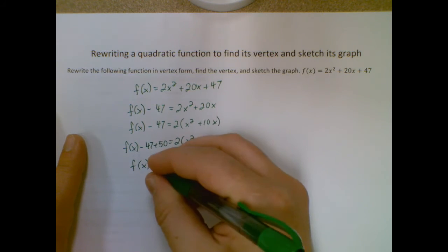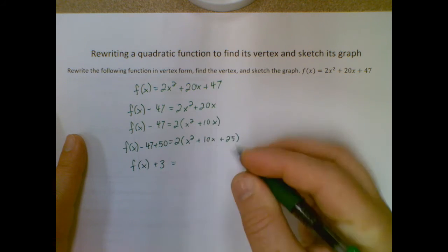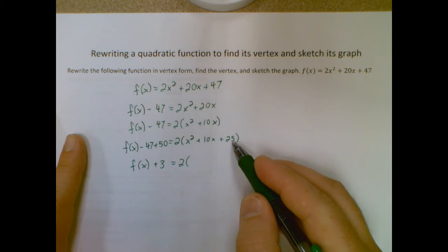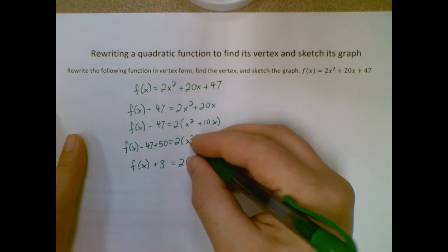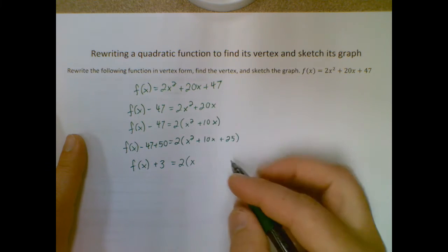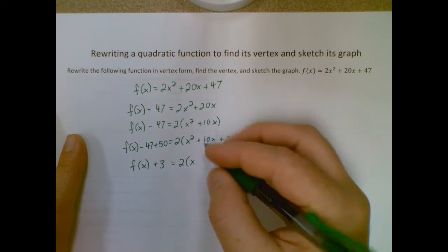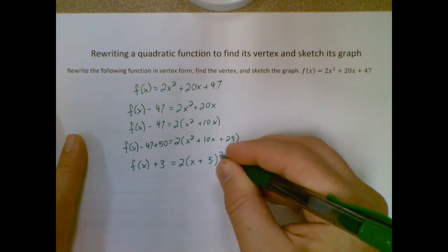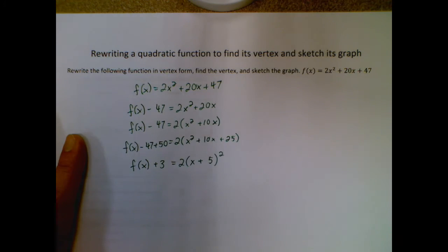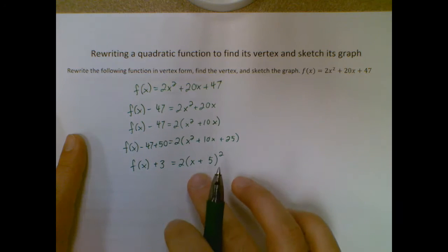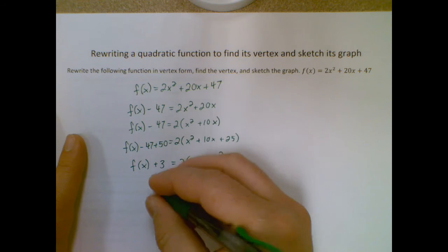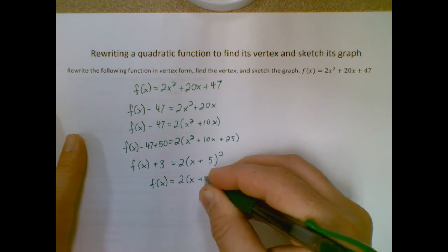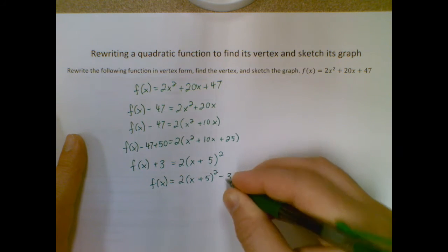Now I have negative 47 plus 50, which is just 3. On this side, I'm going to leave the 2 there. But since this is a perfect square trinomial, I can factor it pretty easily. It's the square root of the first term, so x squared goes to x, the sign of the middle term, and the square root of the last term, quantity squared. Now that I've factored it, I'm almost done. I just have to move this 3 back. So my vertex form looks like this.